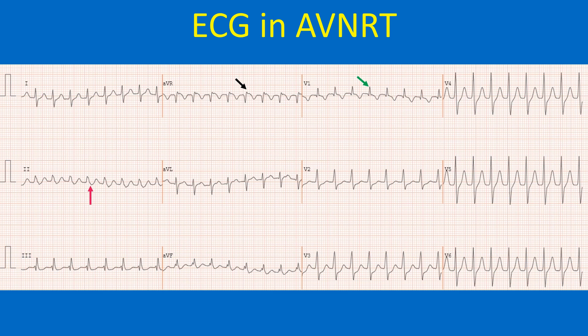This tachycardia can be called a short RP tachycardia, as RP is shorter than PR. The R waves in V1 (green arrow) are a bit too tall to be called pseudo R waves, but the R waves in AVR (black arrow) are of the size usually seen with pseudo R. The taller R wave in V1 could be due to an element of incomplete right bundle branch block from the fast rate — phasic aberrant conduction — with a corresponding prominent S wave in lead 1.